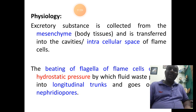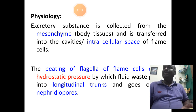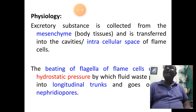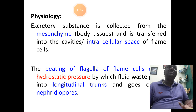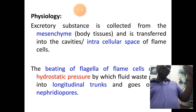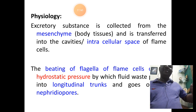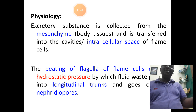Regarding the physiology of the excretory system in planaria: the excretory substances formed are predominantly carbon dioxide, water, and salts. They are removed from the body tissues, that is mesenchyme cells. The waste moves from mesenchyme cells into flame cells, from flame cells into the intracellular space of the flame cell, from there into the excretory trunk, and then out through the nephridiopore or dorsal pores.